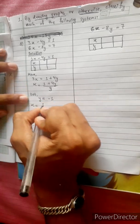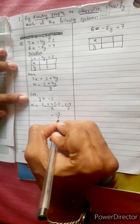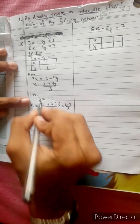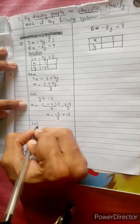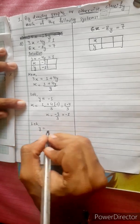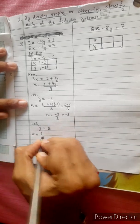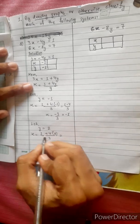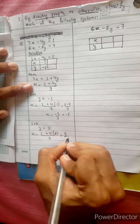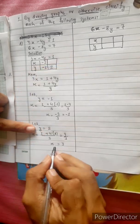If y equals 2, then x equals 1 plus 4 into 2 divided by 3. That gives 4 times 2 is 8, and 8 plus 1 is 9, then 9 divided by 3 equals 3. So when y equals 2, x equals 3.